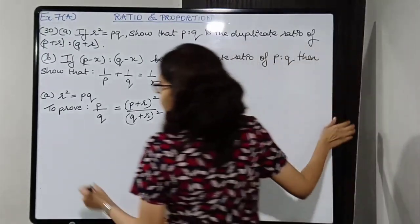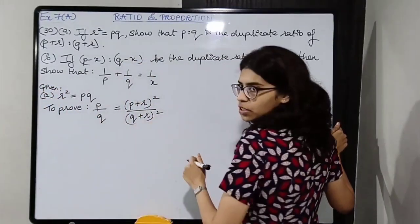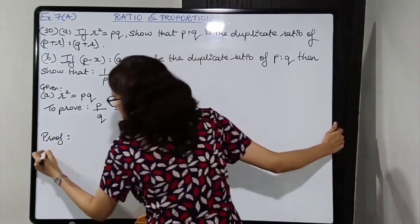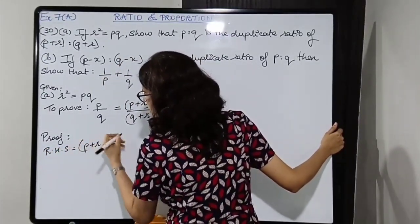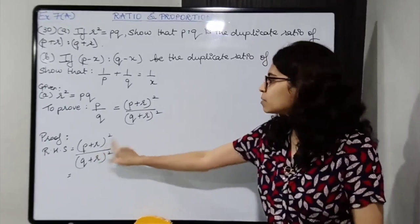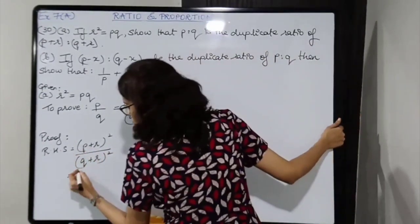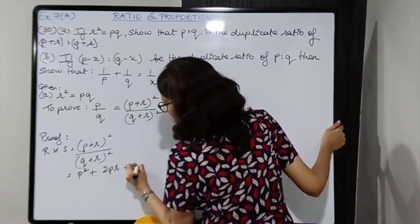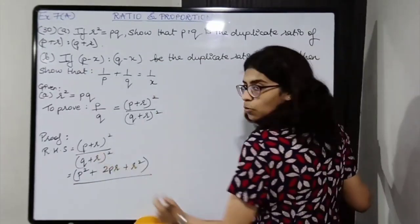Similarly in the denominator: Q squared plus 2QR plus PQ. Take Q common — leaving Q plus 2R plus P inside the bracket. Now check the brackets: P plus 2R plus Q and Q plus 2R plus P — just the positions are different. Rearranging, both brackets become identical: P plus 2R plus Q.